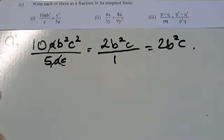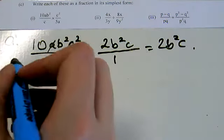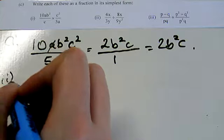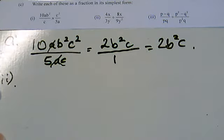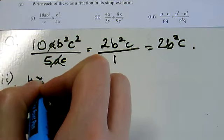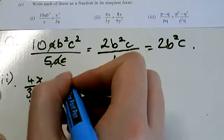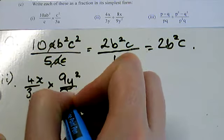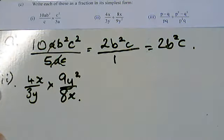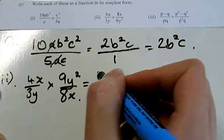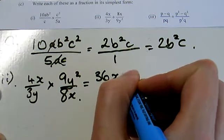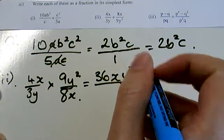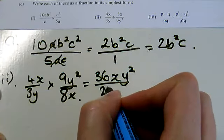Looking at the next part, dividing fractions, we flip the second fraction upside down and we multiply. So the first one is still going to be 4x over 3y, then we're multiplying by 9y squared over 8x. Again, multiplying across the top and across the bottom, I've got 36xy squared and 24xy.